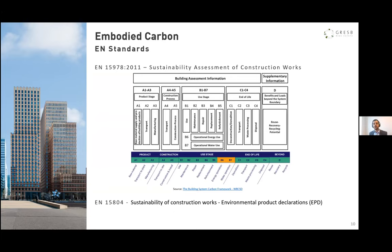When talking about Embodied Carbon, it's important to bring in the EN standards. The first is EN 15978, which defines the life cycle stages of a building and modules within those stages so you can pinpoint carbon emissions. This standard specifies the calculation method through a lifecycle assessment approach to assess the environmental footprint of your building — applicable for both new developments and existing buildings. The green portions in the bar chart illustrate embodied carbon across the building lifecycle, while operational carbon only represents the B6 and B7 modules.